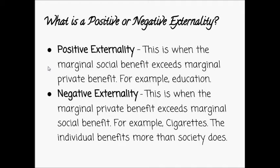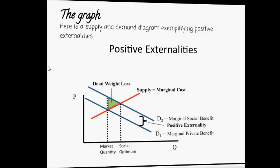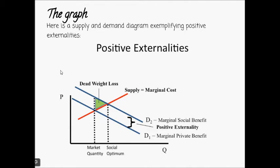When positive externalities exist, the social marginal benefit from consumption of a good or service exceeds the private marginal benefit. Basically, this means that society gains more from a merit good than you do as an individual.